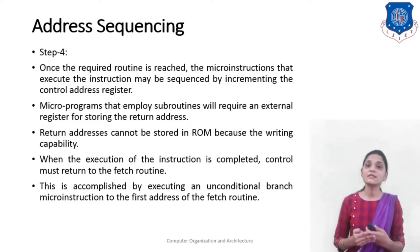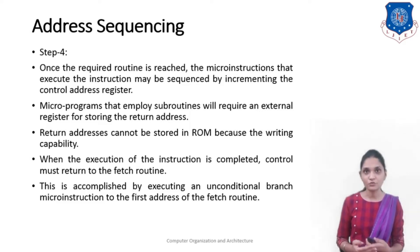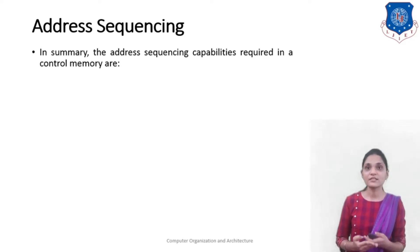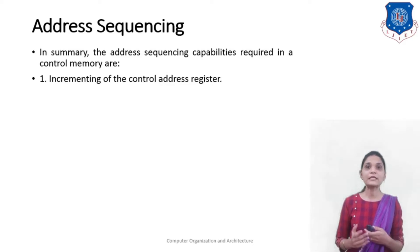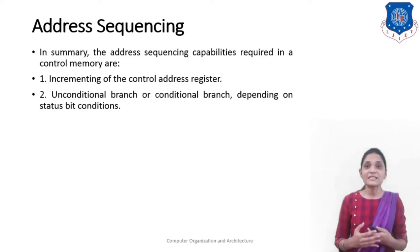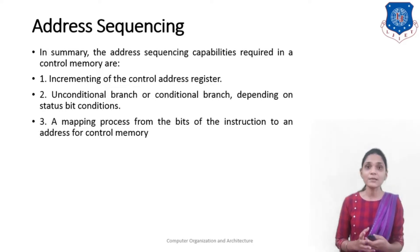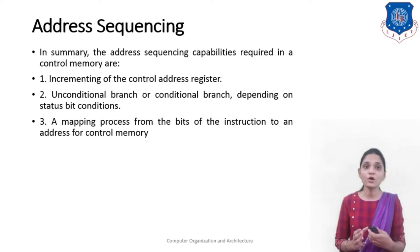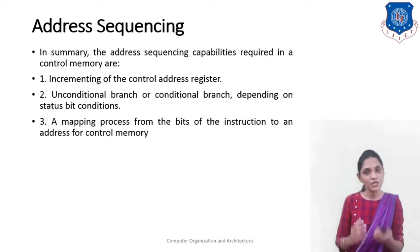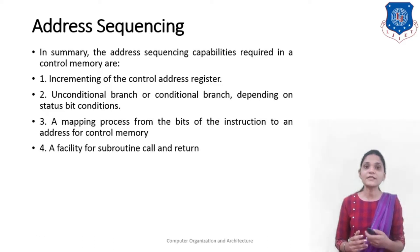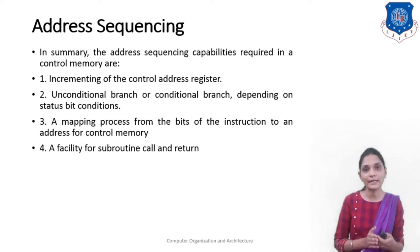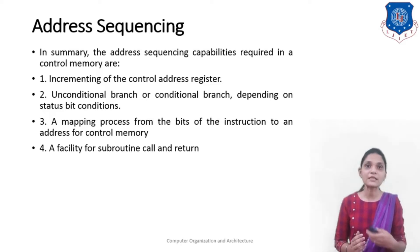To summarize the four steps: step 1 initializes the control address register; step 2 performs an unconditional or conditional branch depending on status bit conditions; step 3 performs the mapping process from instruction bits to the control memory address; and step 4 facilitates subroutine call and return, allowing us to sequence the address.